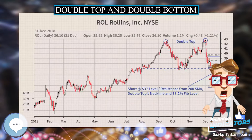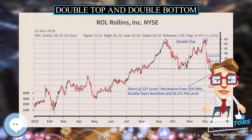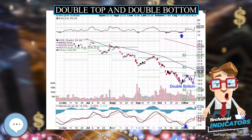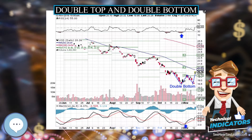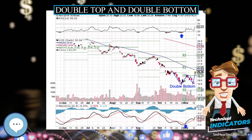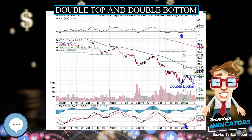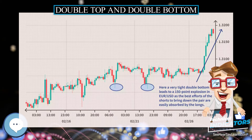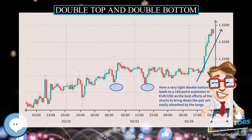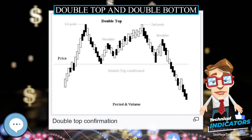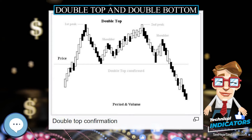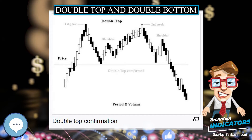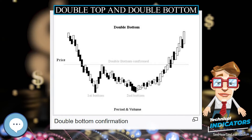The Double Top is a frequent price formation at the end of a bull market. It appears as two consecutive peaks of approximately the same price on a price versus time chart. The two peaks are separated by a minimum in price — a valley — and the price level of this minimum is called the neckline of the formation.